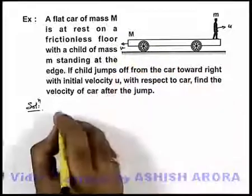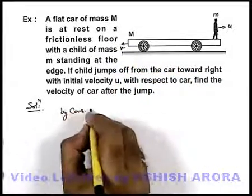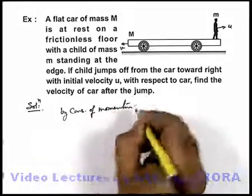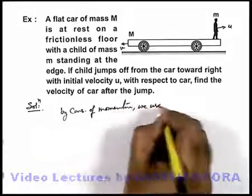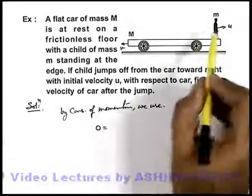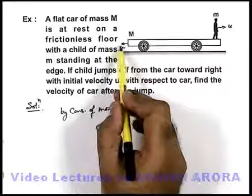So in this situation, by conservation of momentum we use: initial momentum of system was zero, final momentum - if car attains a velocity v, the momentum of car will be M into v in leftward direction.